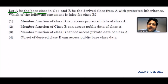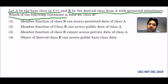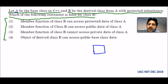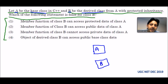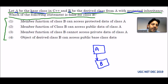Let A be the base class in C++ and B be the derived class from A with protected inheritance. Which of the following statements is false for class B? A is the parent and B is the child, inheriting with protected inheritance, which means all the protected members of A come into B. We will go line by line to find the correct answer.